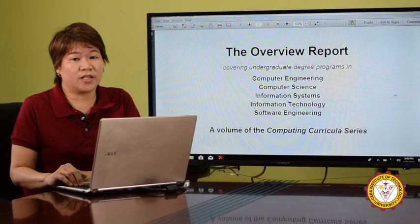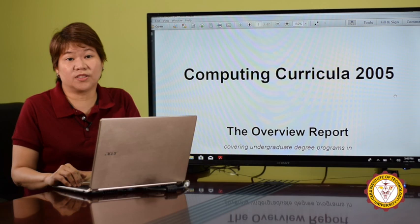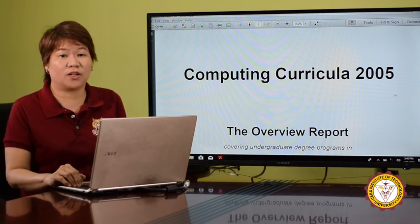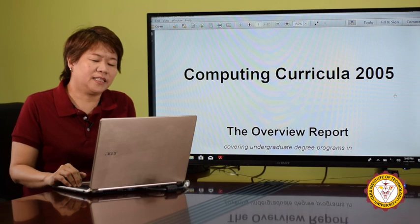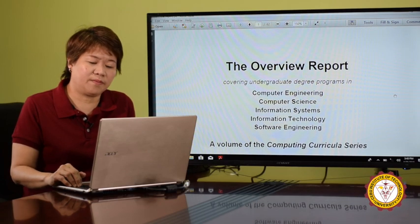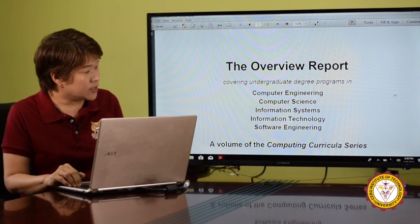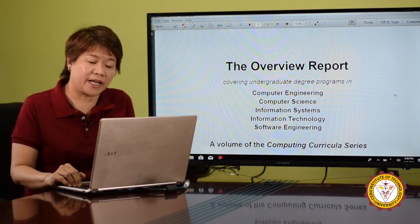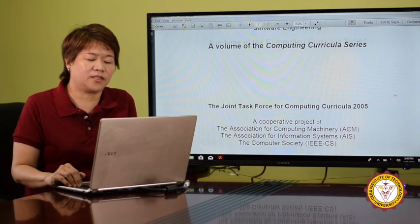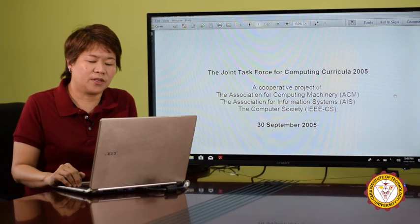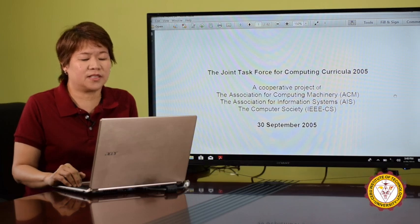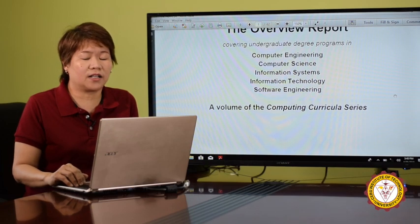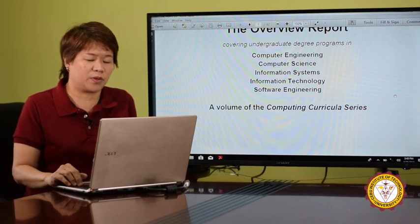Let me answer this question by referring you to a document which is considered the Bible of all computing curricular programs being followed by all universities in the world. This is the Computing Curricula 2005, covering the differences among the various degree programs in computing: computer engineering, computer science, information systems, IT, and software engineering. It was developed by the Association of Computing Machinery together with the Association for Information Systems and the Computer Society, and is the basis for all other computing curricular frameworks specific to the different programs.